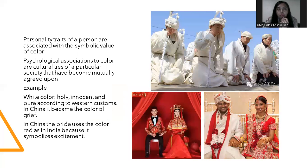Personality of a person is associated with the symbol value of color. Physical qualities associated with color are cultural traits of a particular society. For example, white color in China is used for sadness. Red in India is bright, used because of its symbolic excitement. In China, red is used for weddings.